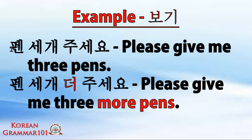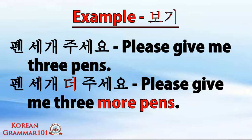'Pen' is pen, 'sege' is se meaning three, and 'ge' is the counting unit for pieces — so sege means three pieces. 'Juiseyo' means please give me. So the sentence means 'please give me three pens.' Now, what happens if we put the word 더 (do)? Pen sege do juiseyo — please give me three more pens. By putting the word 더 before juiseyo, you are saying that you need three more of those pens.